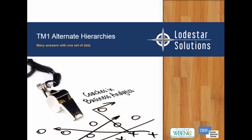Leveraging views within the same cube to achieve different results, the usage of alternate hierarchies saves processing time because you would just need to load the data only once. You won't need additional cubes or formulas either. The dimensions and the hierarchy of elements within them are easily maintained with TI processes that can automate updates.